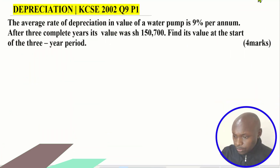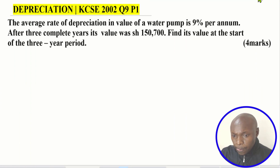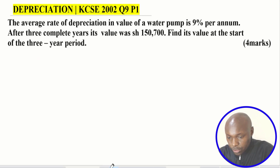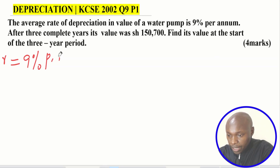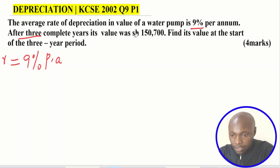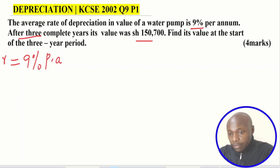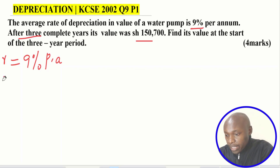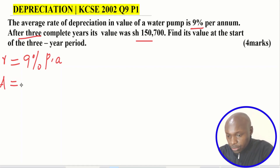Let's go straight to the solution. When you look at this question, look at the values that you're given. You're given the rate of depreciation, which we denote by r, so rate is nine percent per annum. After three complete years its value was 150,700 — that is after depreciation, the final value, which we denote by A. This is the final amount or value after depreciation, which was 150,700.